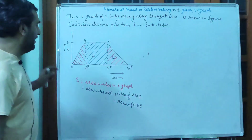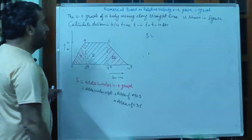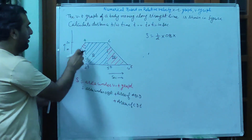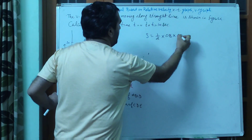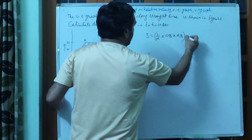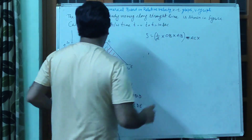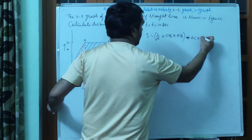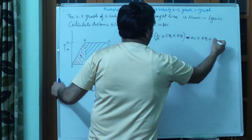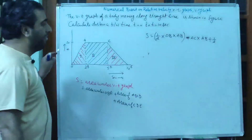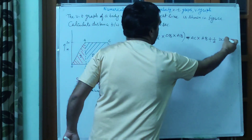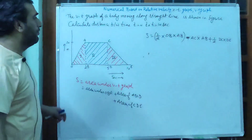Triangle का area पहले लेंगे: S = half into base OB into height AB। यह 1st region का area आ गया। अब दूसरे region का area: length AC into breadth AB। Plus third region का area: half into height DC into base DE।